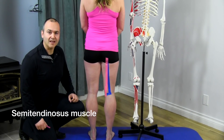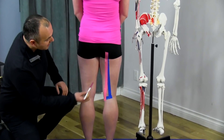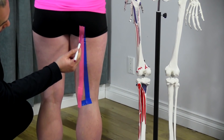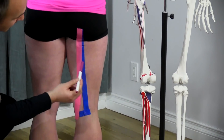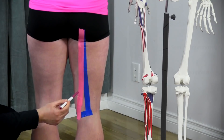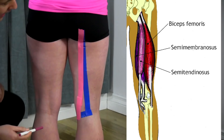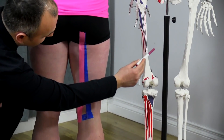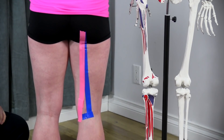The second hamstring muscle is the semitendinosus. The semitendinosus is posterior to the semimembranosus. It originates off of the ischial tuberosity, like all the hamstrings, coming down slightly more medial, and it actually inserts via a very thin, long tendon along the superior medial aspect of the tibia. So coming off the ischial tuberosity, coming down, inserting more to the medial side of the superior tibia.